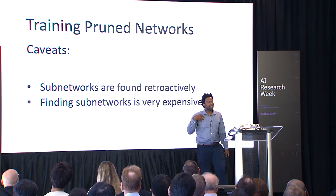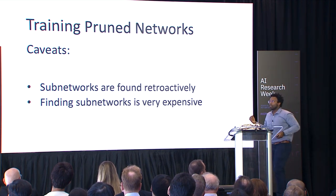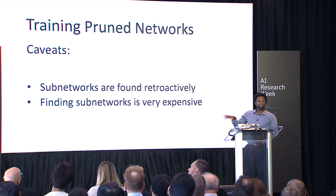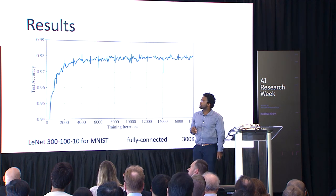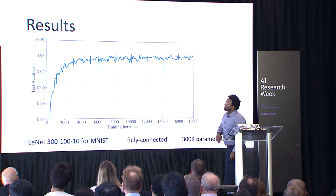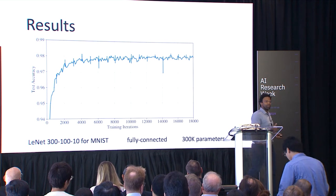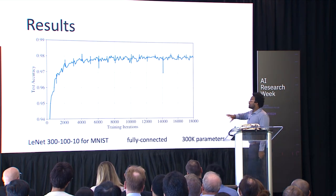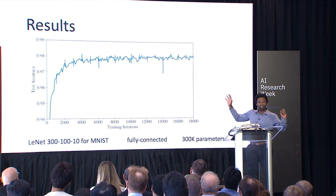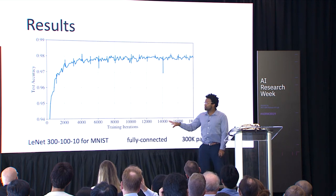These networks we're finding are often an order of magnitude smaller than the original, tend to learn faster, and reach the same or better accuracy. One caveat: these sub-networks are found retroactively — after training, we recover the initialization and discover this network. There's still room to make progress toward identifying these during training. To show results, we plot test accuracy of training the sub-network as a function of our point in training, adding more data as we move through.